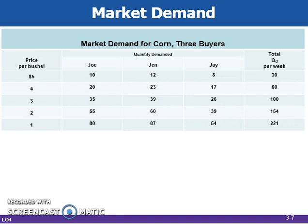In this example, there are three buyers in the market for corn, each with their own individual demand schedule. The market demand is the horizontal summation of the individual demand curves of all the consumers in the market. At a price of $3, for example, Joe demands 35 bushels, Jen demands 39 bushels, and Jay demands 26 bushels, but the three individual curves yield a total quantity demanded of 100 bushels. For credits, create an individual curve for Jay and a market curve and bring it to class tomorrow.